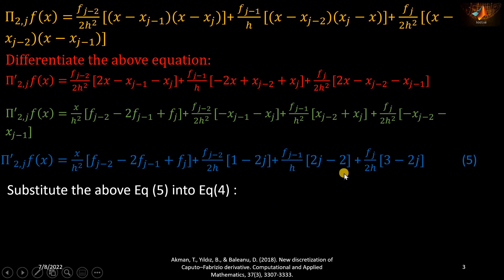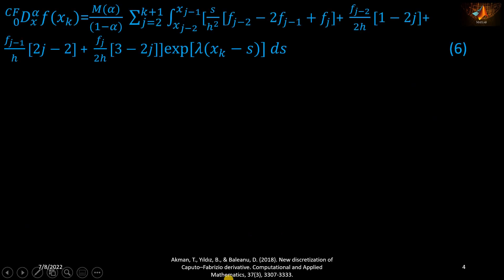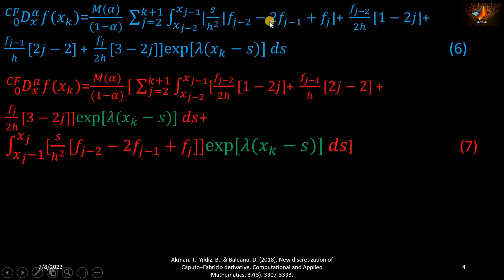We are now ready to substitute equation number five into equation number four in place of the first-order derivative. After substituting the right-hand side of equation five into equation four, we get equation number six. In equation number six, we notice an exponential function involving the variable s, which we can distribute over both terms to obtain equation number seven.